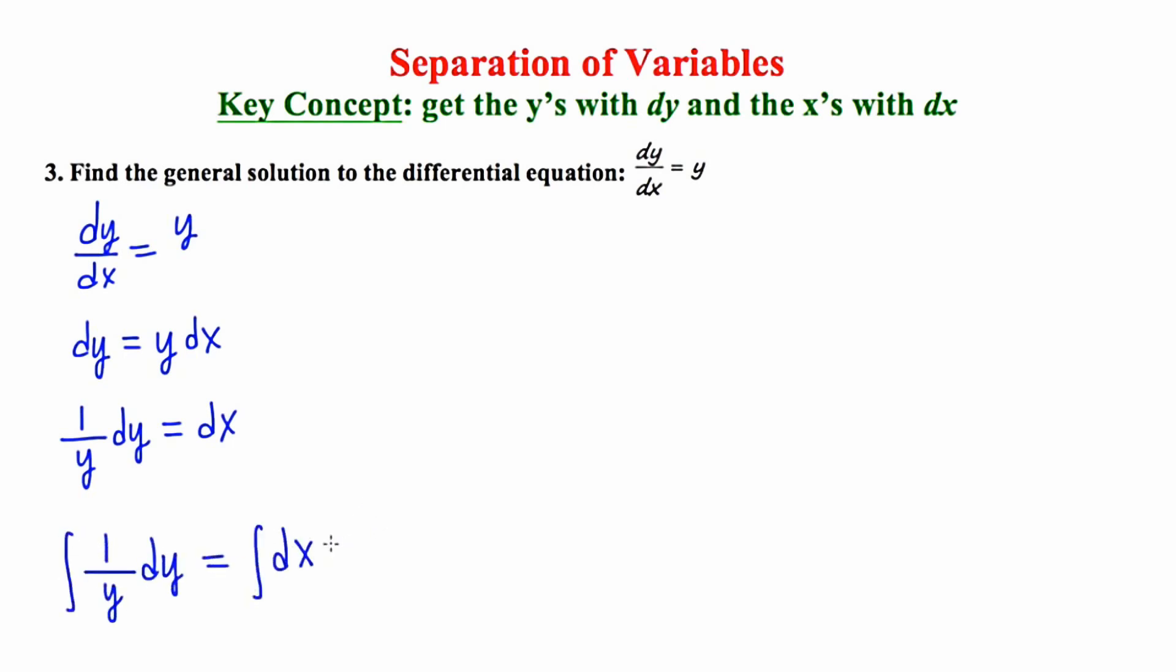Now I'm running out of room, so I'm going to come up to the top. The anti-derivative of one over y is the natural log of the absolute value of y. And the anti-derivative of one dx is just going to be x, and then of course, plus c. Now our objective in a problem like this is usually to make your final answer say y equals. So we're not quite at that point yet. So the next thing that I'm going to do is think about what the base of my natural log expression is.